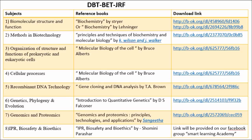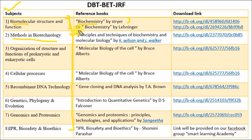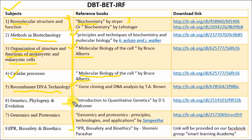Now let's look at the important books for the DBT-JRF examination, which is divided into Part A and Part B. Part A is the General Biotechnology section, divided into eight units. For Biomolecular Structure and Function, refer Biochemistry by Stryer. For Methods in Biotechnology, refer Principles and Techniques by Wilson and Walker. For Organization and Function of Prokaryotic and Eukaryotic Cells, refer Molecular Biology of the Cell by Bruce Alberts — the same book also covers Cellular Processes. For Recombinant DNA Technology, refer Gene Cloning by T.A. Brown. For Genetics, Phylogeny and Evolution, refer Introduction to Quantitative Genetics by D.S. Falconer. For Genomics and Proteomics, refer Genomics and Proteomics by Sangeeta. For IPR, Biosafety and Bioethics, refer IPR, Biosafety and Bioethics by Swamini Parasar — the link will be provided on the Facebook group.